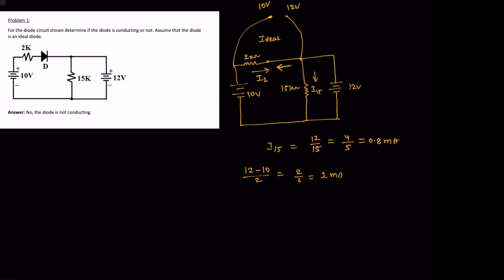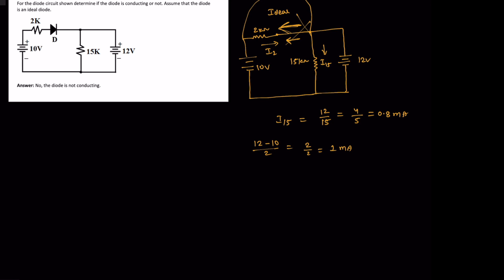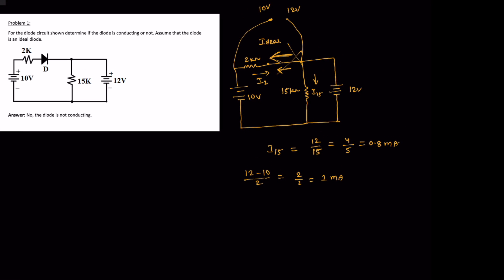But this is against to our assumption because the current will not flow in this direction. So our assumption is wrong because we have assumed that the diode is conducting and it is in forward bias. So the current should flow from anode to cathode, so that is wrong, our assumption is wrong. So simply we can tell now the diode is not conducting, diode is off.